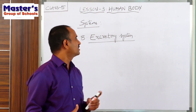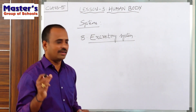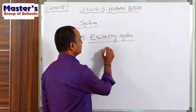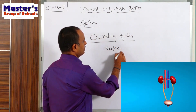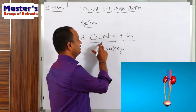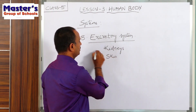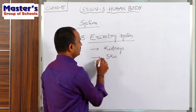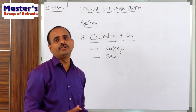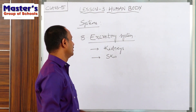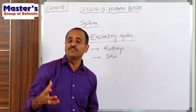What are the main parts in the excretory system? The main parts in the excretory system are kidneys and skin. So what does the kidneys do and what does the skin do? What are the functions of the kidneys and what are the functions of the skin?